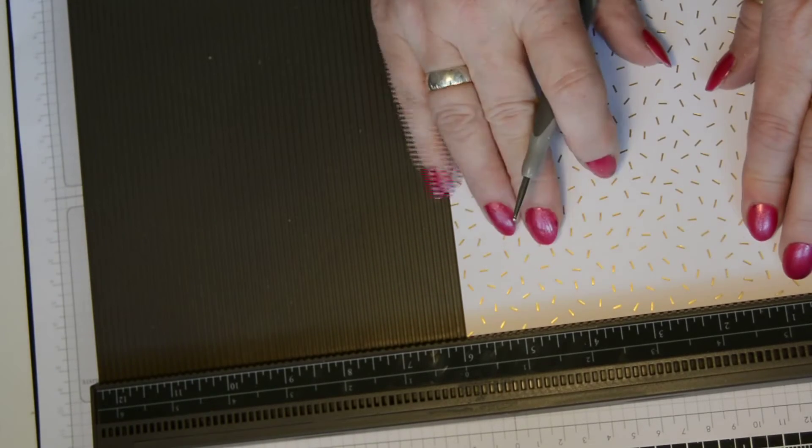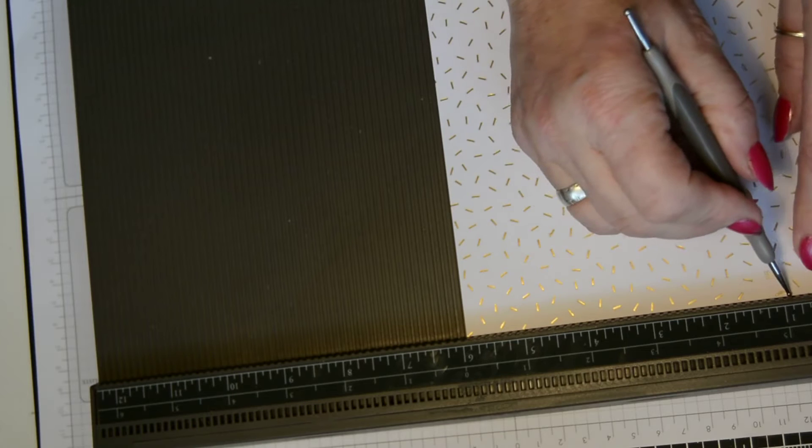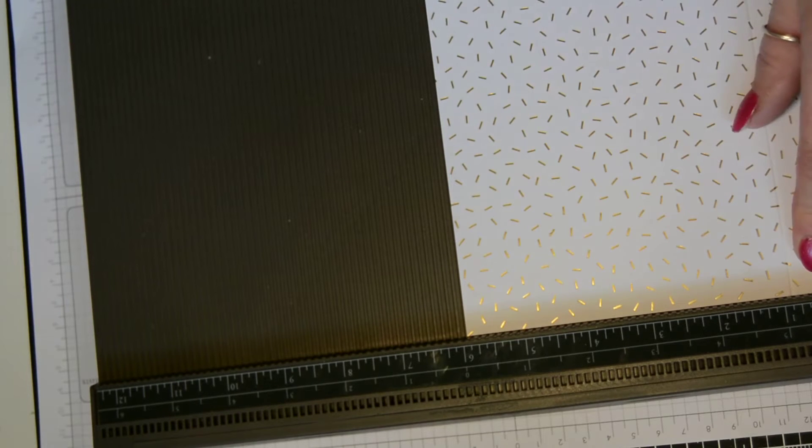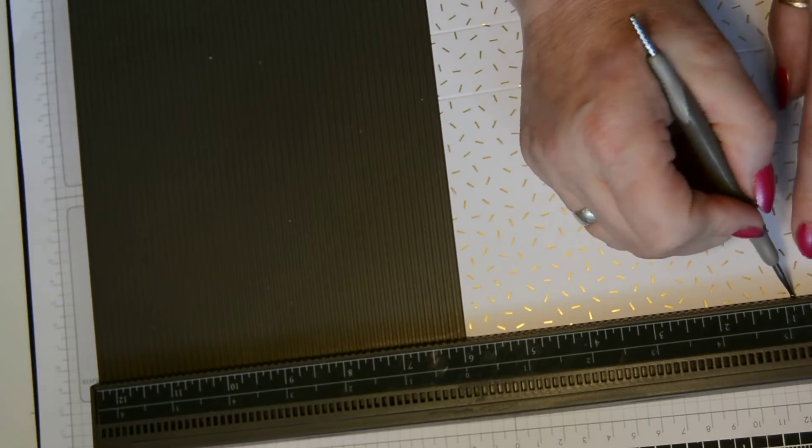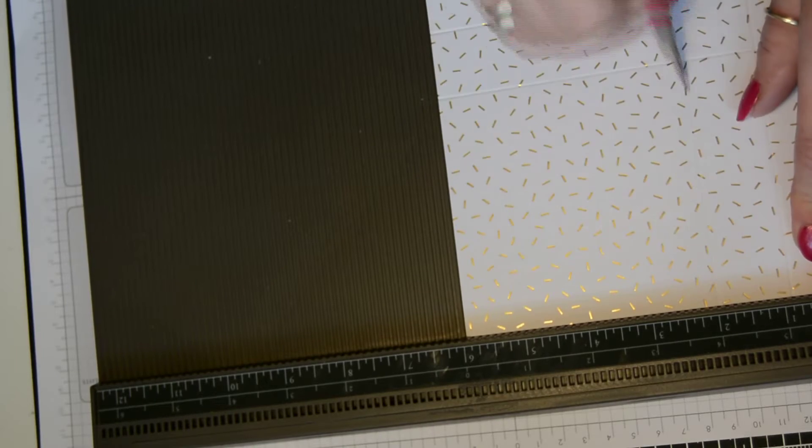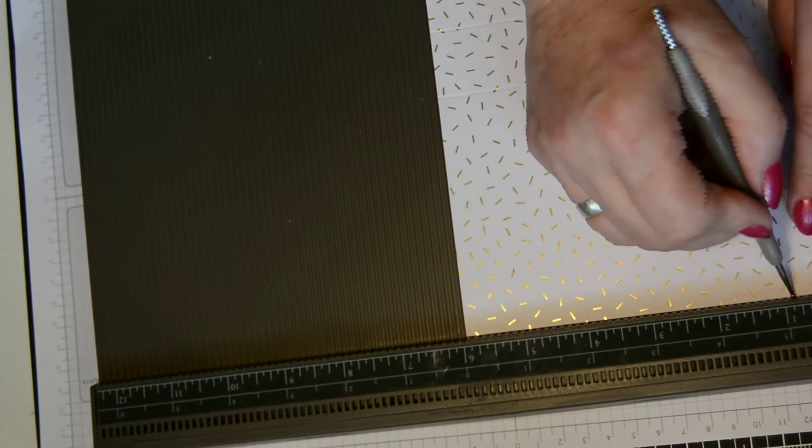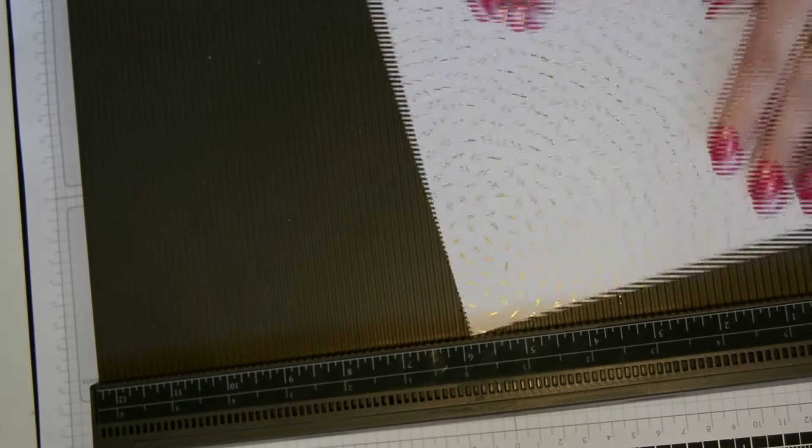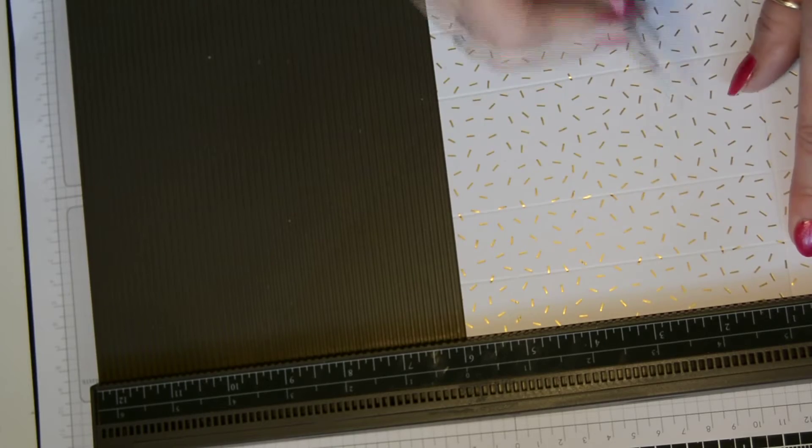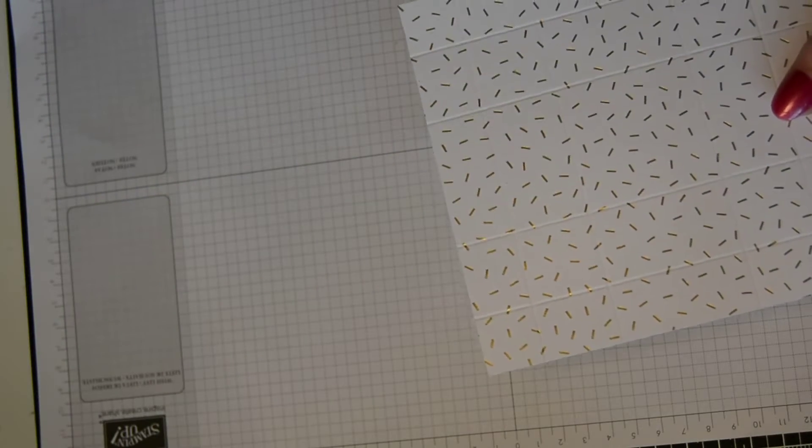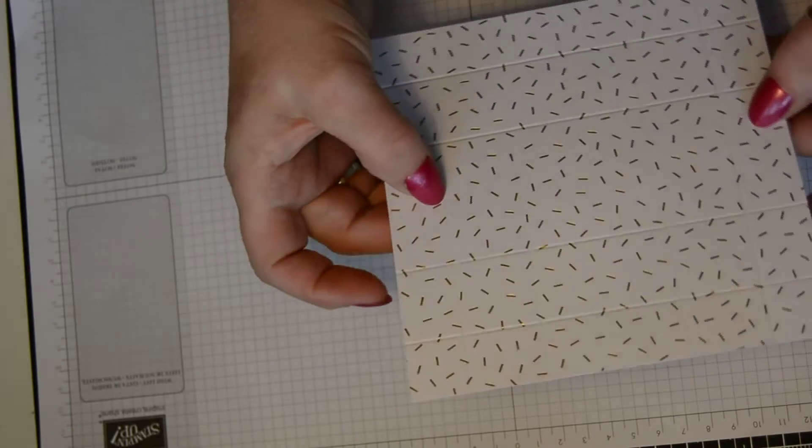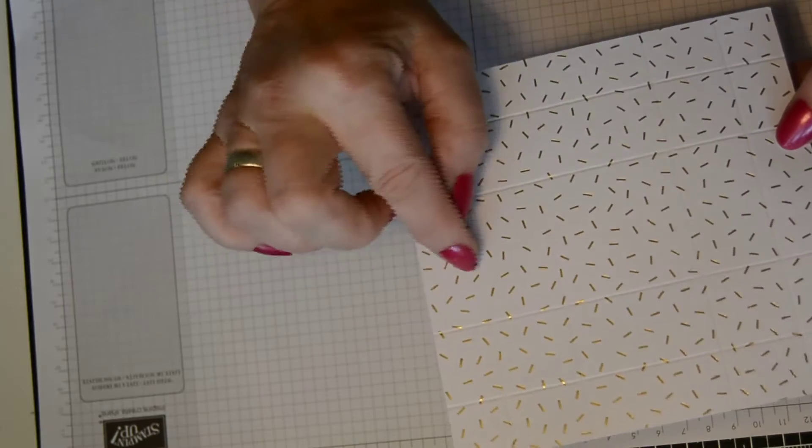And on the top, we're going to score first at seven eighths of an inch and then at two inches, and turn and do that on all four sides. So that's seven eighths inch and two inches, turn, seven eighths and two inches, turn, seven eighths and two inches, last side, seven eighths and two inches.